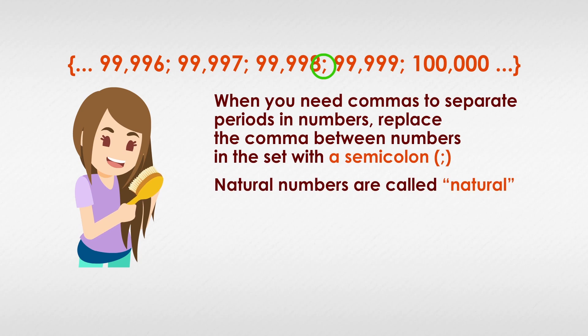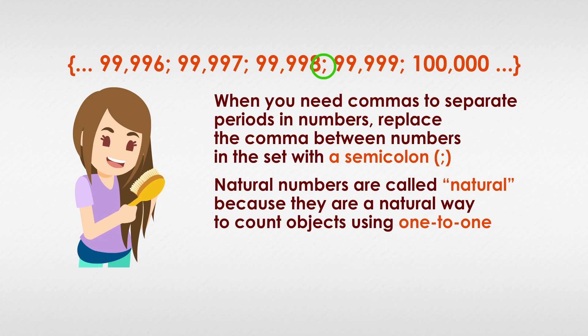Natural numbers are called natural because they are a natural way to count objects using one-to-one correspondence. We have one number for every object, no matter what we are counting, real or imagined. Here are exactly nine countable examples.